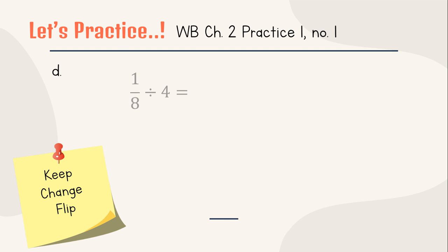D: one per eight divided by four. Keep one per eight. Change that division symbol into multiplication. Flip: that four becomes one per four. Multiply: one times one equals one, eight times four equals 32. So the answer is one per 32.